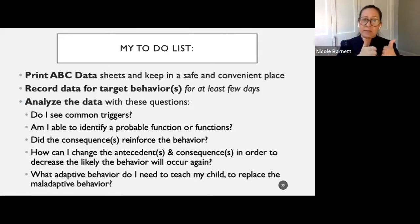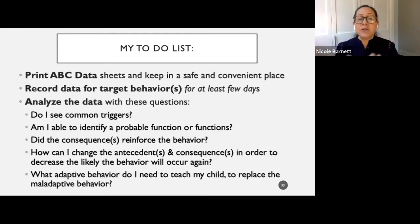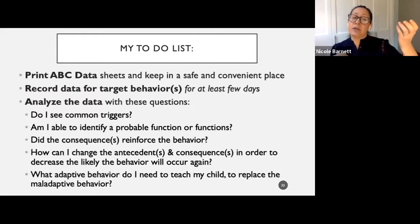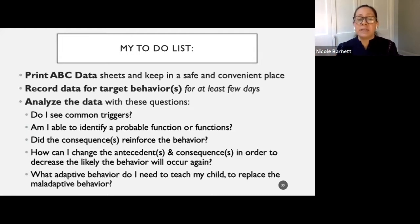Then see if you can identify the probable function with your hypothesis. As you look at your antecedent, behavior, and consequence, decide what the possible function is. Were you able to analyze the consequence and determine if it has been actually reinforcing the behavior? Most likely yes. Then try to figure out how you can change the antecedents — the location, the triggers. When you look at those triggers, you can use preventative strategies to eliminate them. And you can look at the consequences, which you have a lot of control over, and start to tweak those.